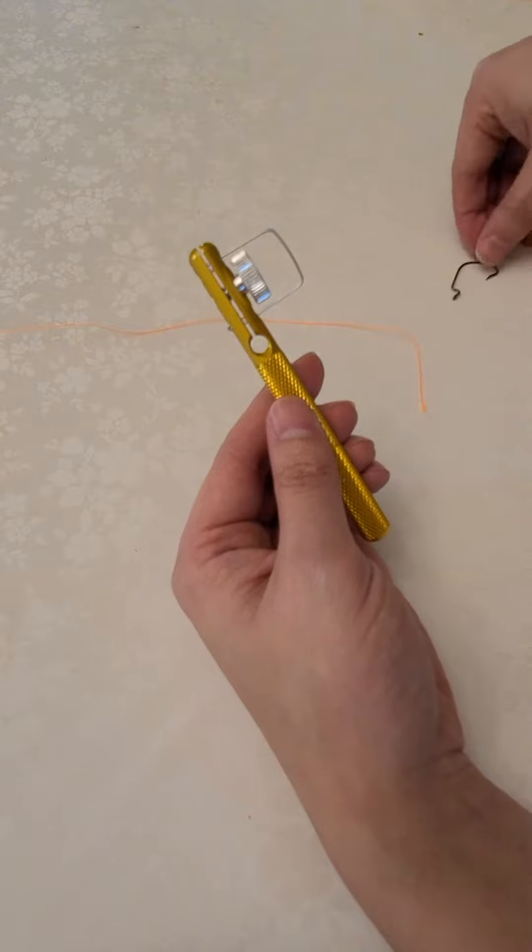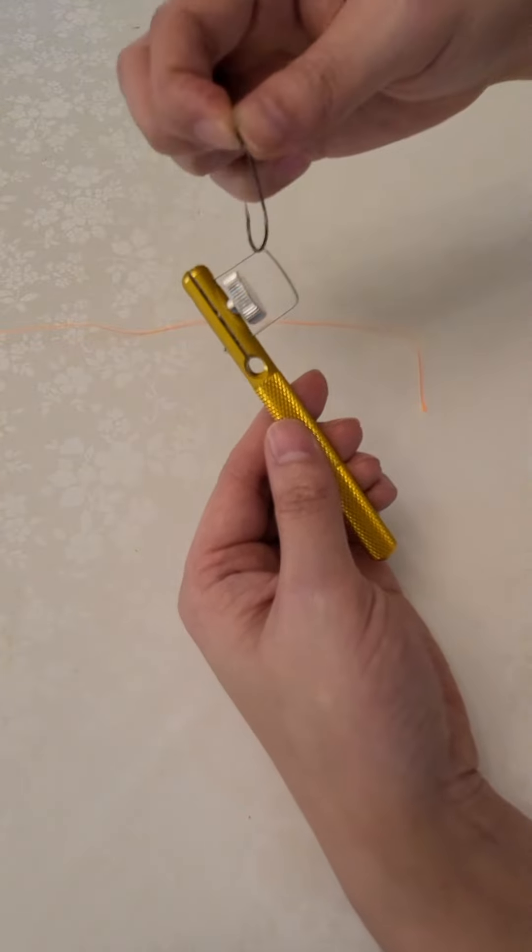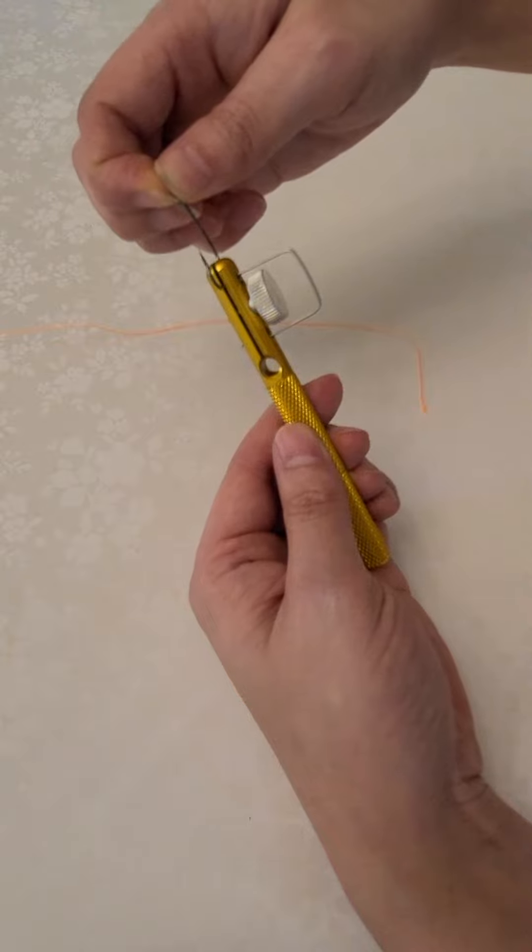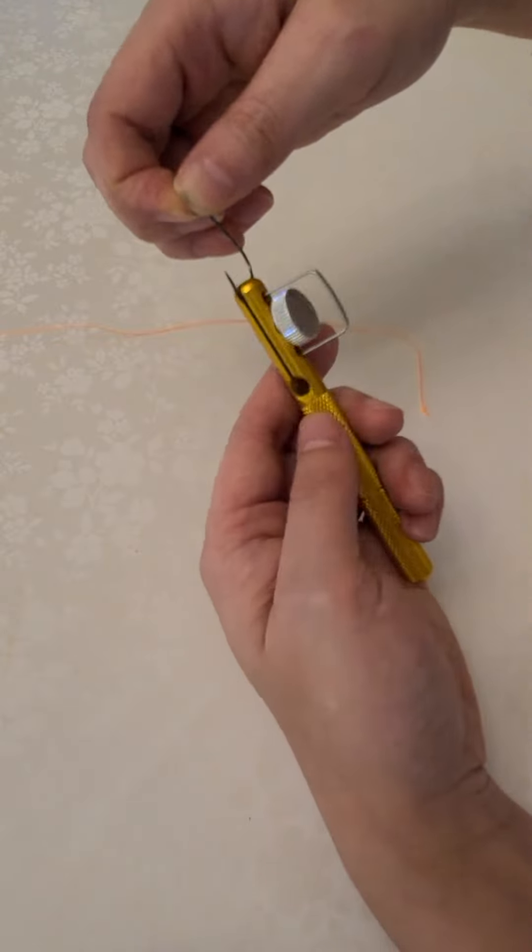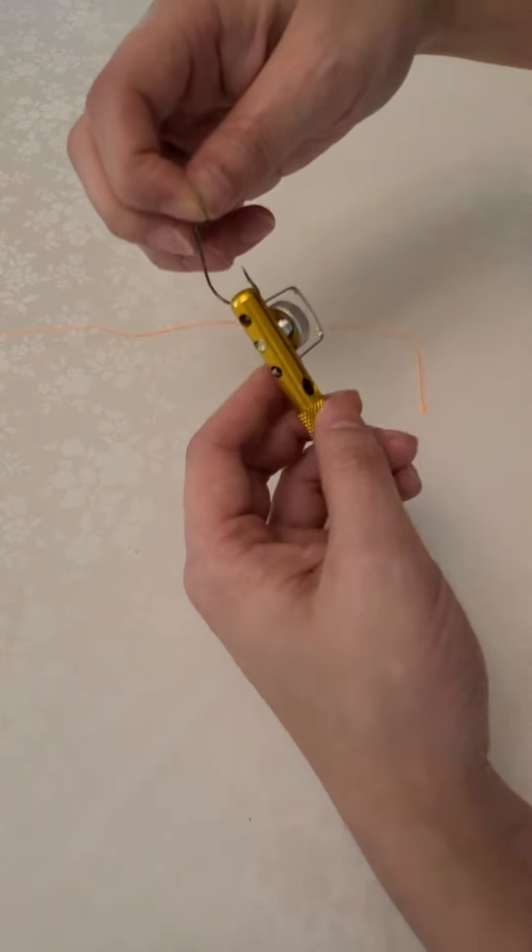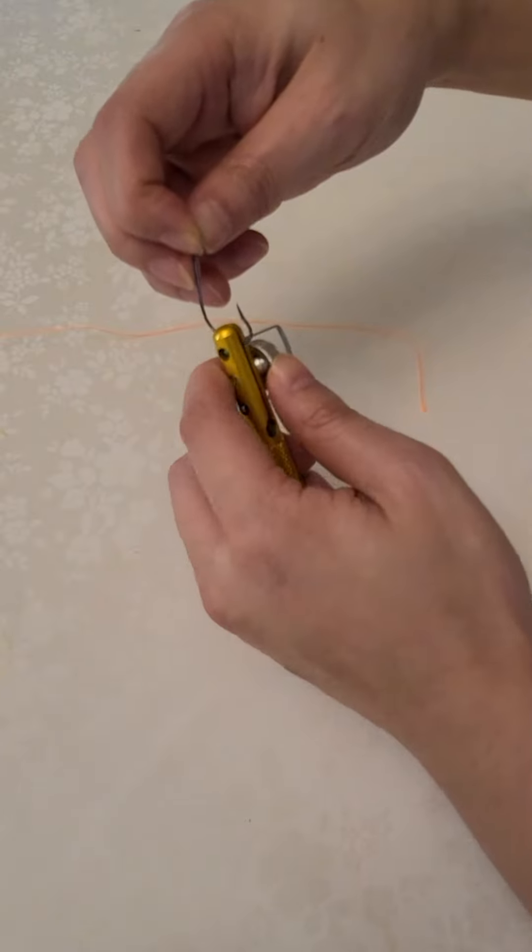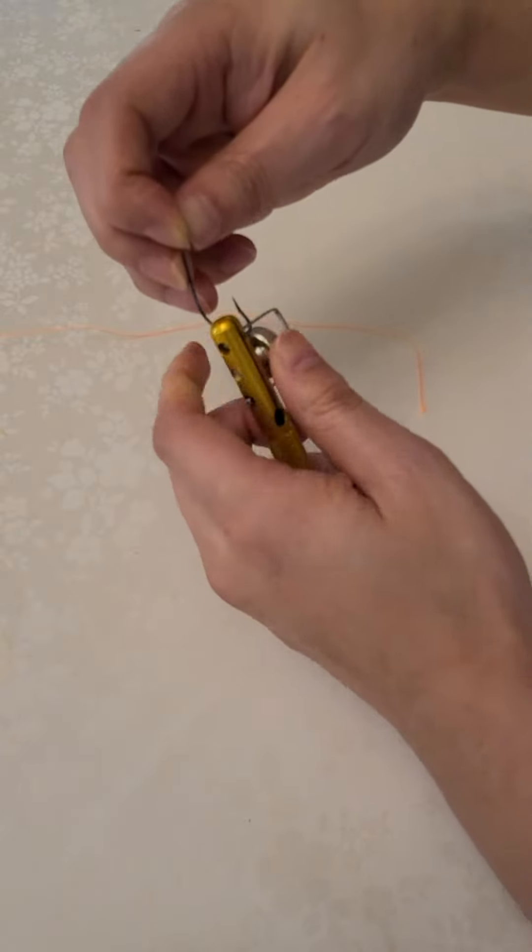Alright, so first off, we're going to take the fishing hook, place it right into the groove, just clipping the bottom of the hook, and then we'll tighten the knob. This will hold it in place.